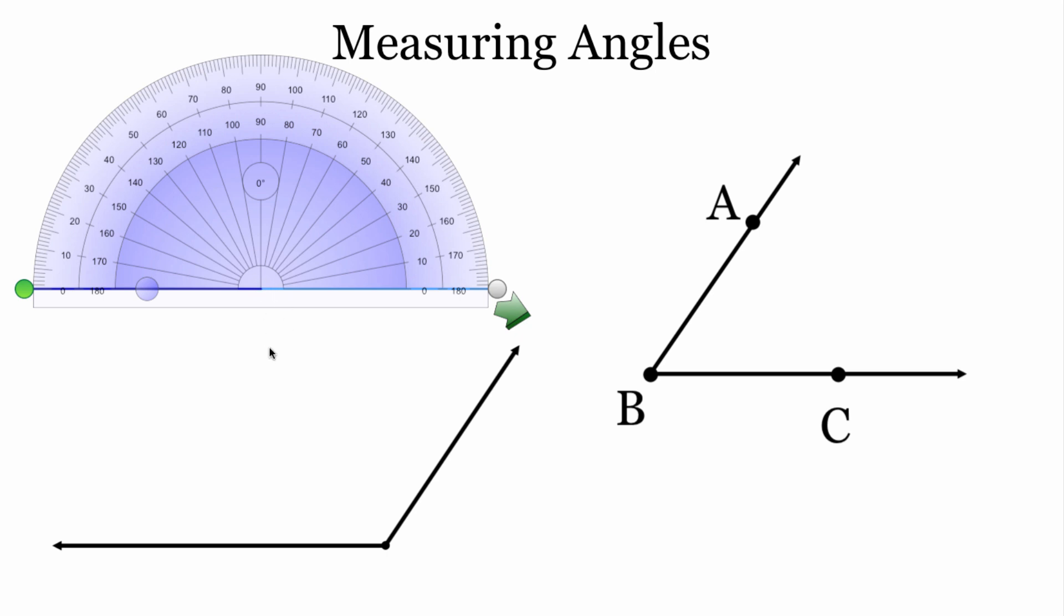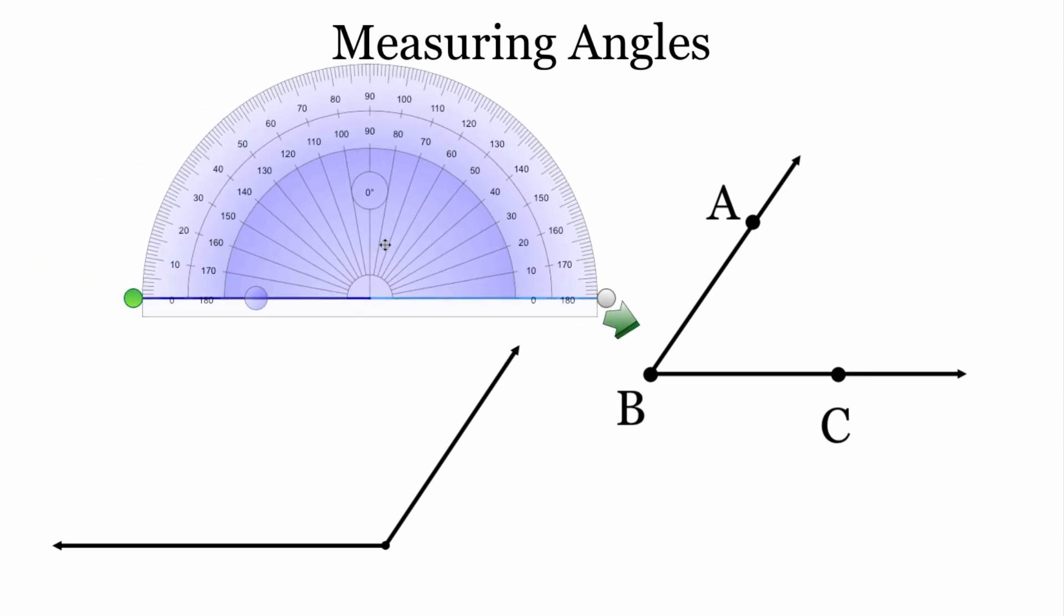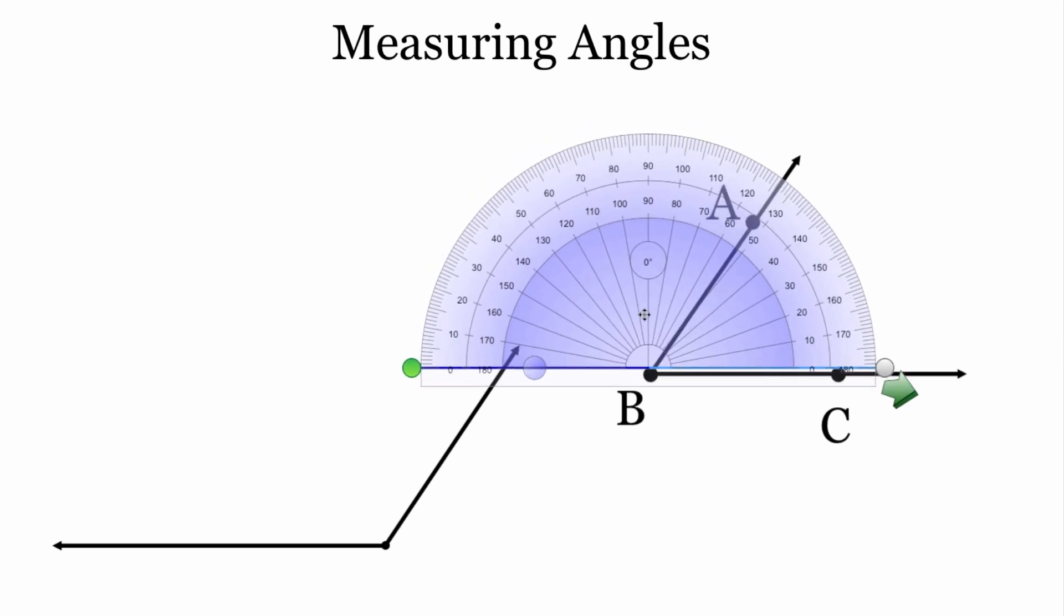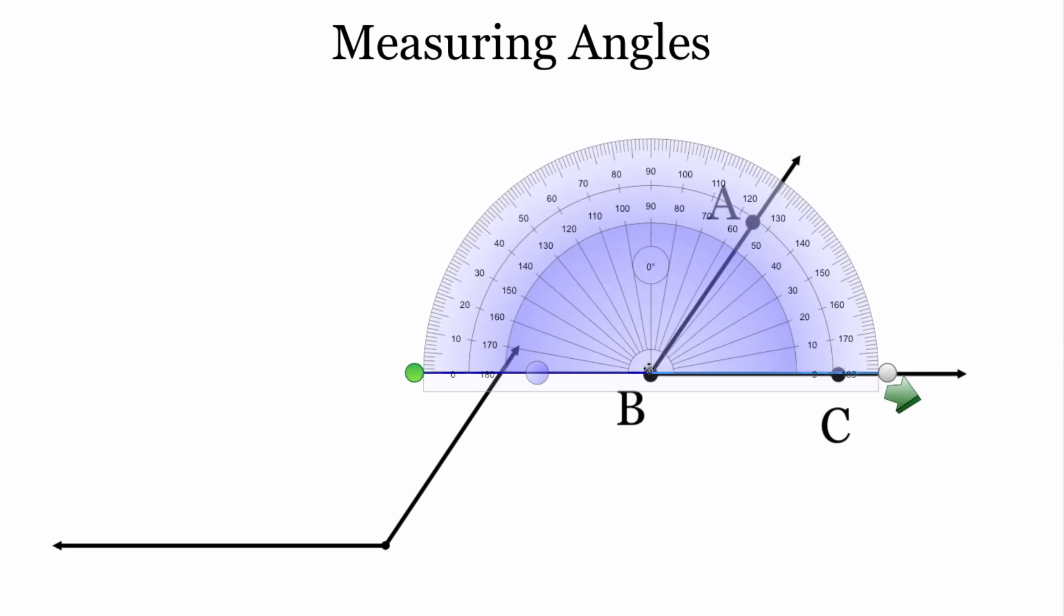And we're going to put that on the vertex of our angle. So I'm going to start with this angle on the right hand side where we've got angle A, B, C. Again, I'm going to take that upside down T and put it right at the vertex point so that the flat horizontal line lines up with the bottom line of our angle. And now what we're going to look at or what we're going to focus on is where does our other side of the angle match up with some of those numbers up there. Now,